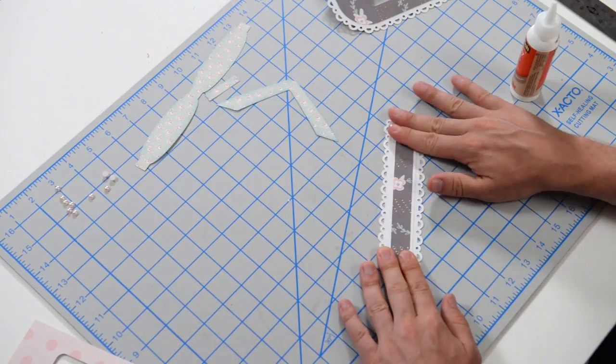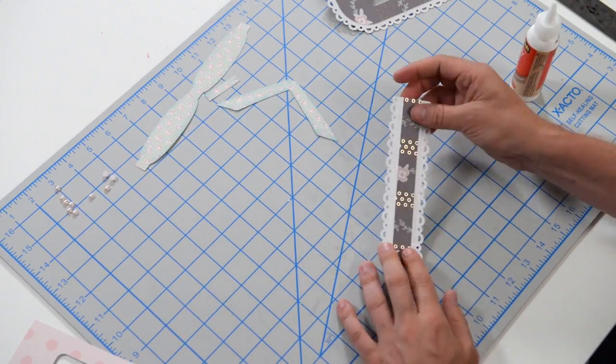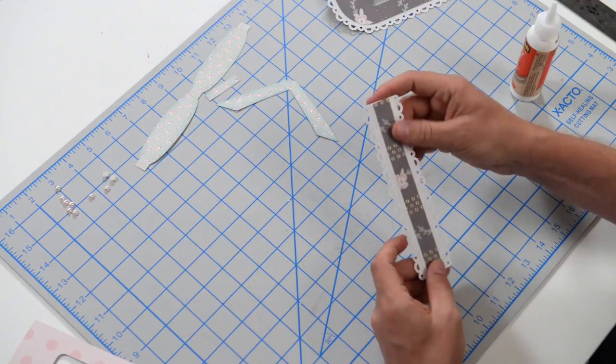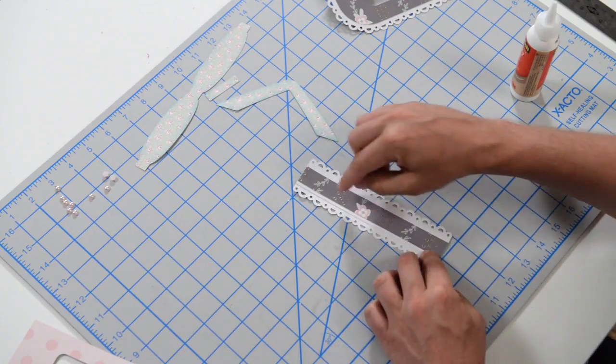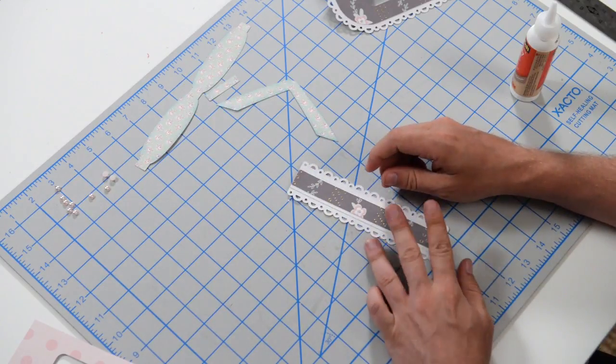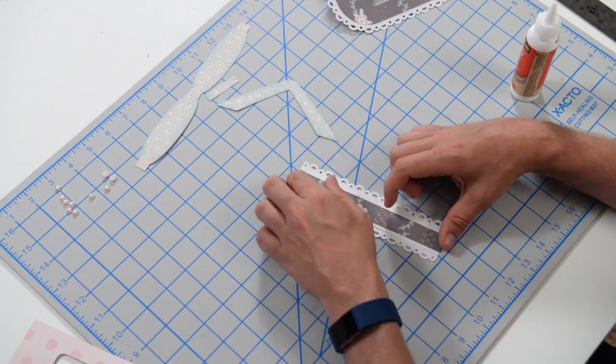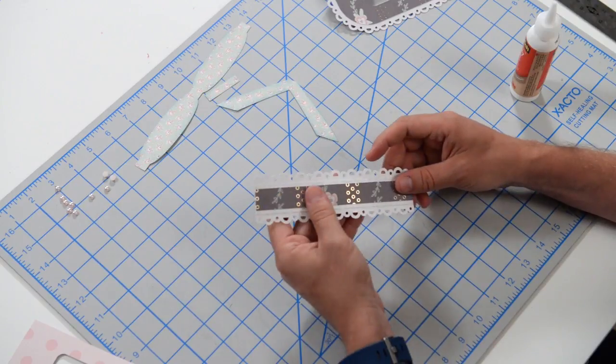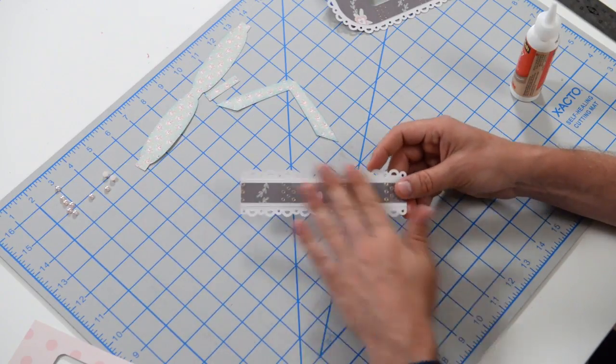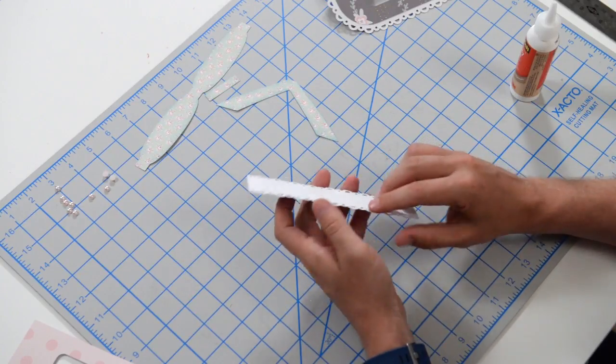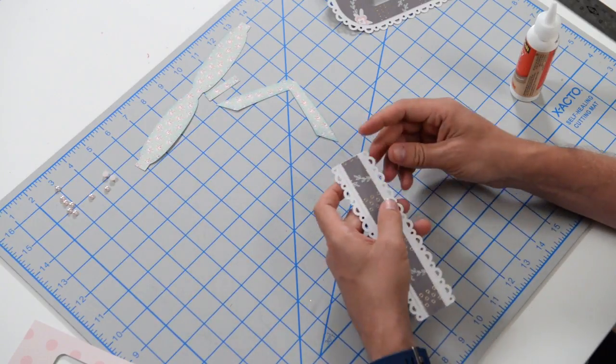Now, once we get this on there, the way that Ron designed this was he wanted to add some little pearls on this little strip here so that they almost look like little buttons. I guess, you know, it's like a nice little blouse with some lace trim. Okay. So we're going to get this glued on in just a little bit.